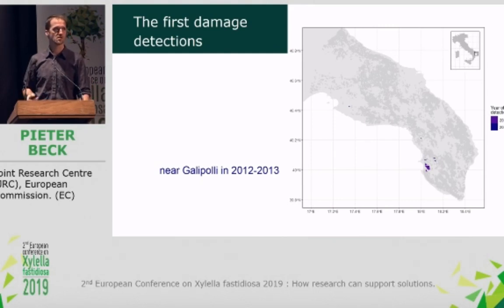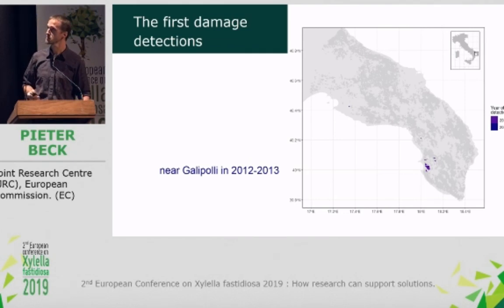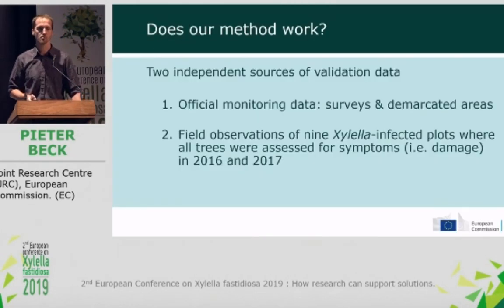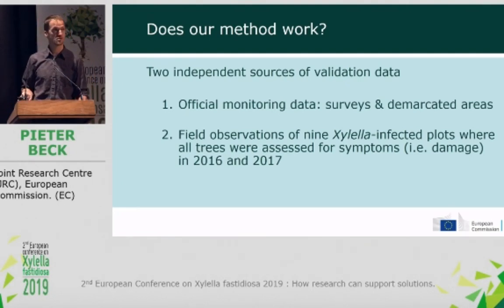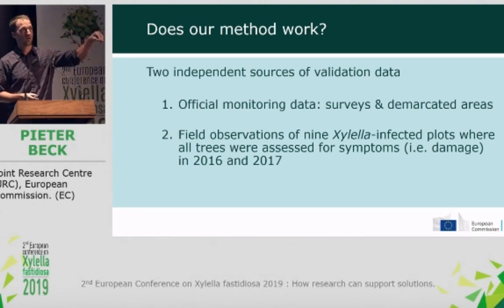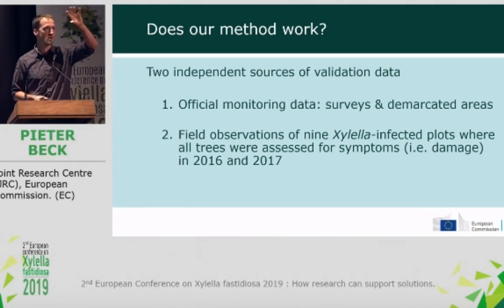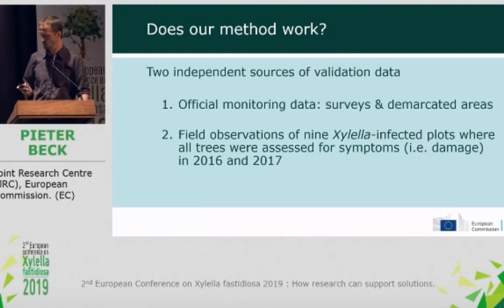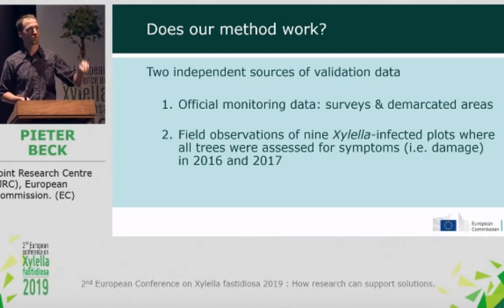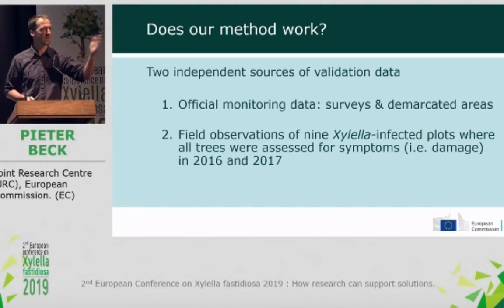But that's not sufficient to validate our method. So how do we validate it? We have two sources of independent validation data. One is the official monitoring data, which includes not only the infection points but also the demarcated area — the buffer zone is assumed to be Xylella-free and hence damage-free. The second source is field observations made in nine plots where every single tree has been scored between zero and four in two subsequent years, allowing us to assess the level of damage on the ground and compare it to our predictions.